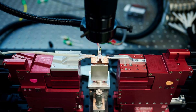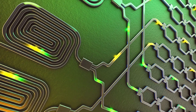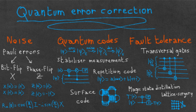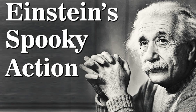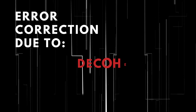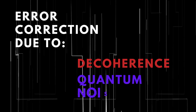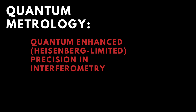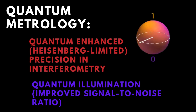Moving on to quantum computing, photonic qubits can be utilized for performing quantum teleportation and implementing quantum error correction codes. This allows for the transfer of quantum states from one location to another using entangled photons, and mitigating errors in quantum computing systems for reliable computation. Next we have quantum sensing and metrology, where the quantum properties of photonic qubits such as superposition and entanglement can be utilized to achieve enhanced precision in measurements.